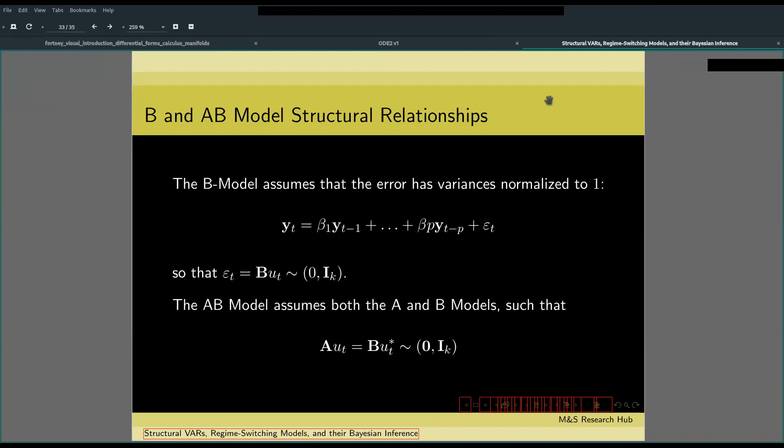The AB model assumes both the A and B models. Now, the AB model is very useful in estimating the economic variables defined as a system of linear equations. For example, in macroeconometrics, we have what's known as the ISLM model. The AB model is usually used to estimate that.